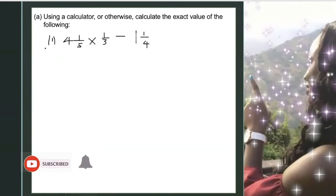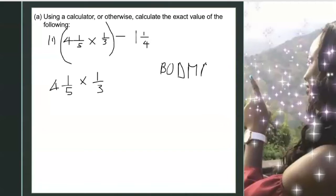First I'll be looking at multiplying this first. So we're going to have 4 and 1/5 times 1/3. Now how did I know I need to multiply first? Because some persons know it as BODMAS, others know it as BOMDAS.